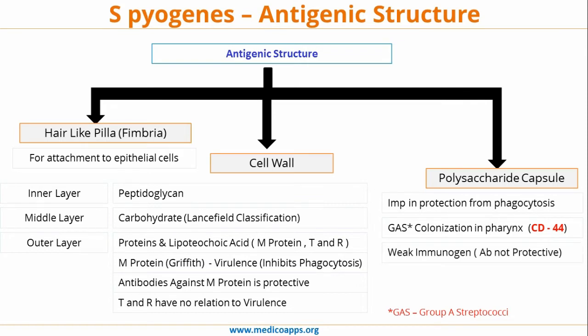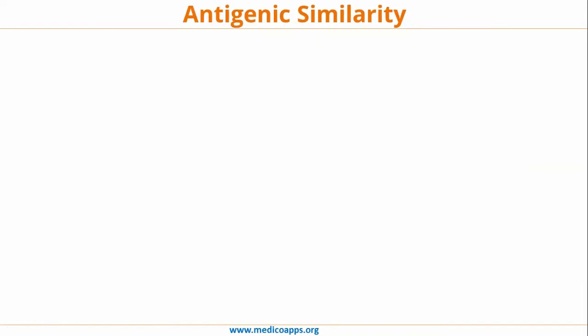The capsular polysaccharide also plays an important role in colonization in the pharynx by binding to CD44 expressed on human epithelial cells, and it is a very weak immunogen, so antibodies against polysaccharide are not protective. Key points: M protein is very important for virulence, found in the outer layer, inhibits phagocytosis, and antibodies against M protein are protective. The polysaccharide capsule made of hyaluronic acid is important for protection from phagocytosis and colonization in the pharynx, but antibodies against it are not protective.